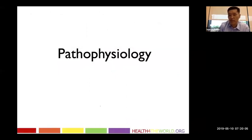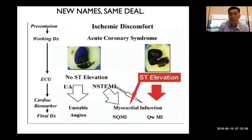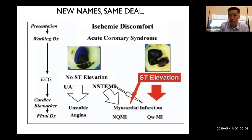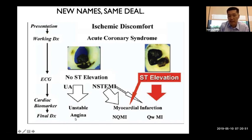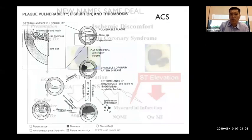Now let's discuss the basic pathophysiology of acute coronary syndrome. When patients present with chest pain, we work through a flowchart: if the EKG shows ST elevation, the artery is 100% blocked — that's a STEMI. If there's no ST elevation but biomarkers are positive, that's a non-ST MI. If biomarkers are negative, it's unstable angina.